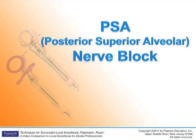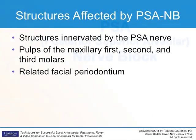The posterior superior alveolar, or PSA, is a nerve block injection that anesthetizes the pulpal and osseous tissues, periodontal ligaments, buccal gingiva, and adjacent vestibular mucosa of the first, second, and third maxillary molars.